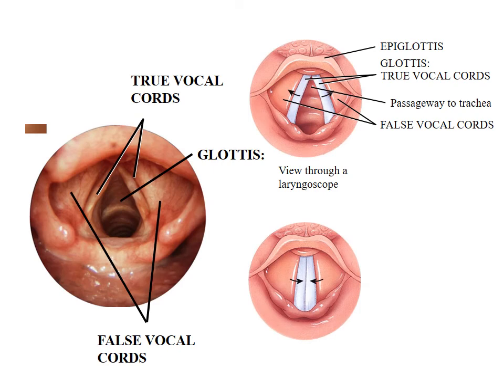Inside the area of the larynx, there are some special structures — what we call our voice box. There are only three things I want you to know. The first two are sets of skin folds. The white skin fold on either side of this opening — these are called true vocal cords. They are the ones that vibrate and make noise. The true vocal cords can close to cover up the passageway to the lungs, which changes the shape of the opening called the glottis.